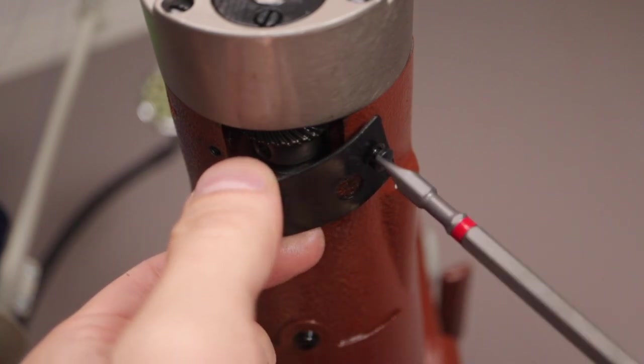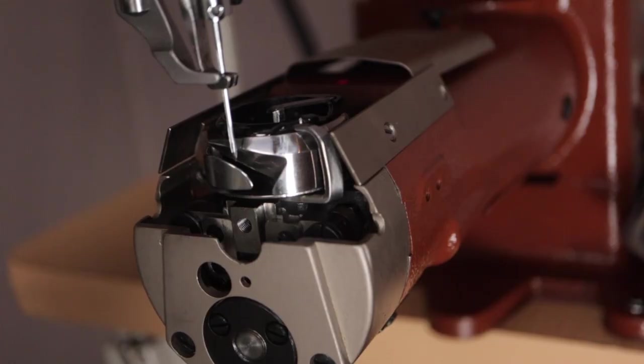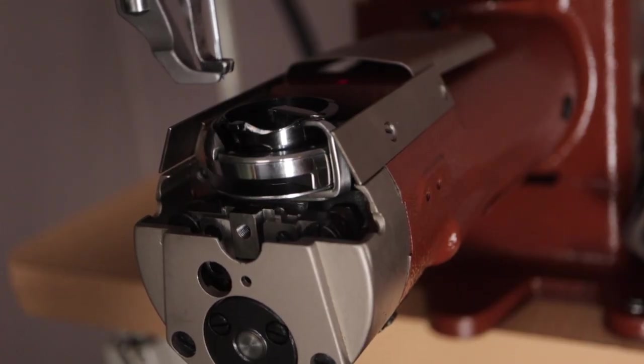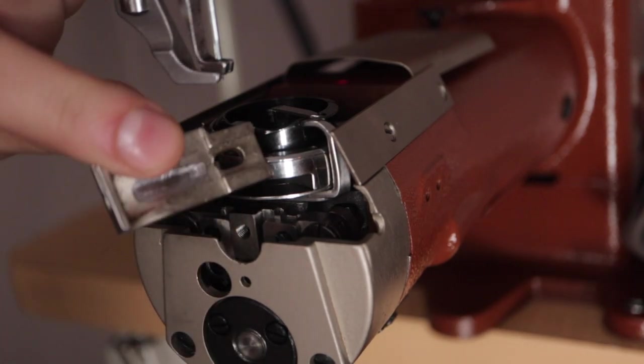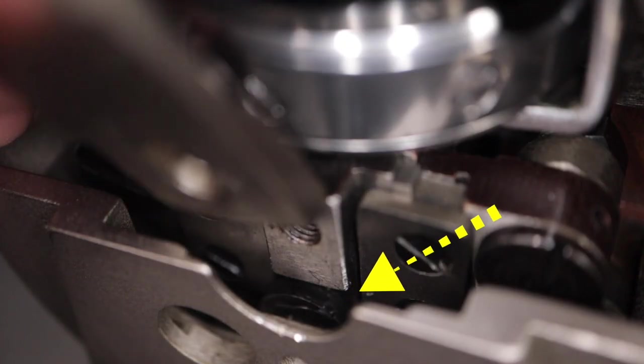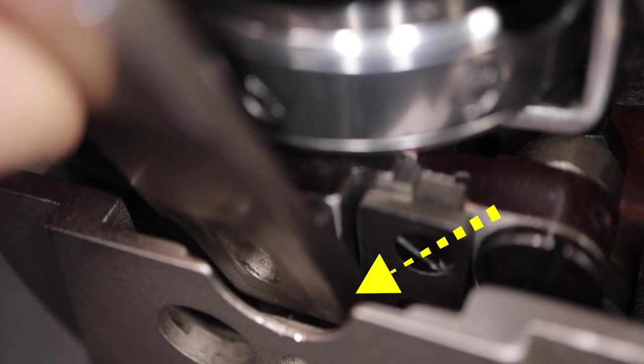Screw the bottom throat cover plate back into place. For installation of the feed dog, you want to take a close look at the lower black screw that acts as a base for the bottom of the feed dog to rest against as you fit it into the proper grooved shaft.